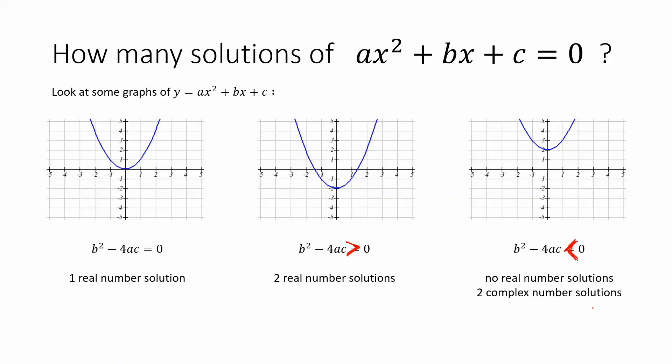When the discriminant is zero, the parabola touches the horizontal axis at exactly one point. When it's positive, the parabola crosses the horizontal axis at two points, giving two real solutions. When the discriminant is negative, the parabola doesn't touch the horizontal axis at all, which is why there are no real number solutions. But even when there are no real solutions, there will still be two complex number solutions.